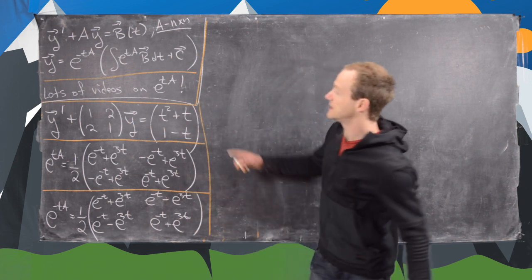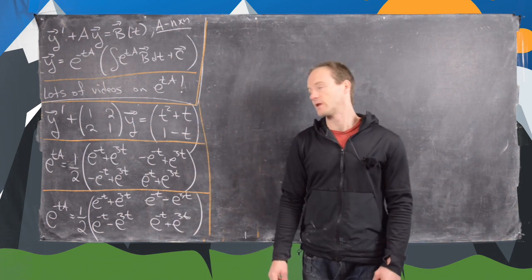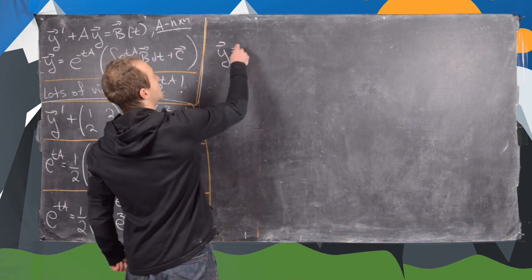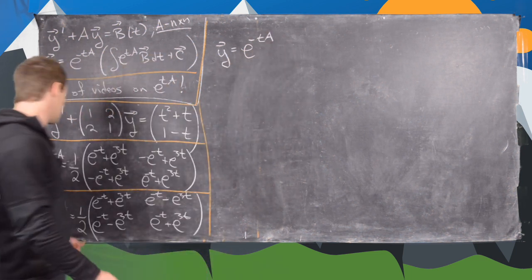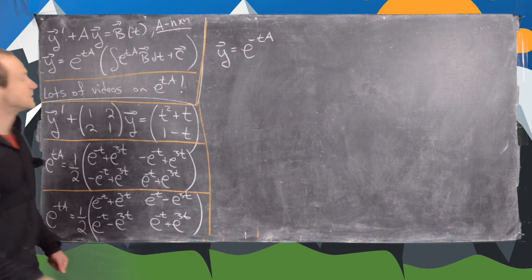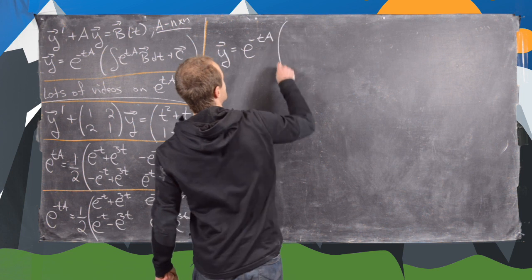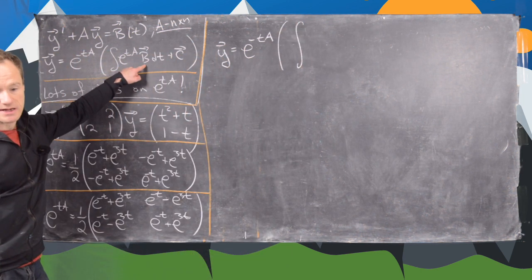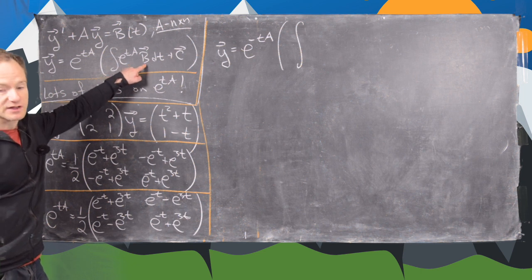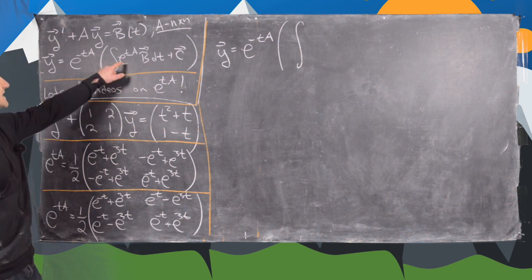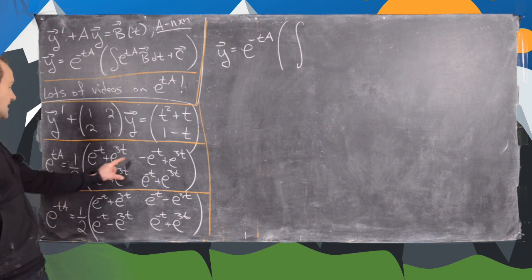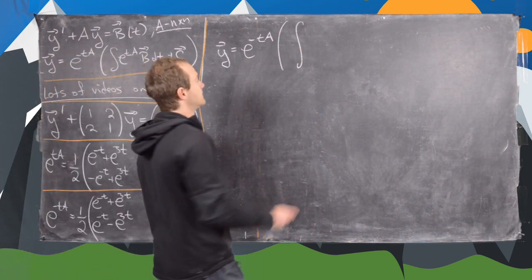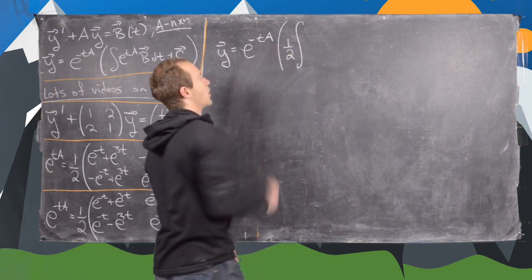Now we can put all of these parts into the formula. We have y equals e to the minus tA — that's this matrix — times the antiderivative of e to the tA times b. If you calculate e to the tA times b, that's this matrix times this vector, and you'll get the following.